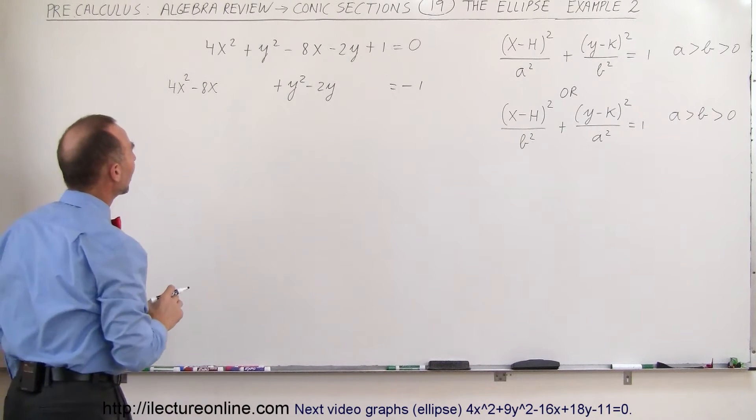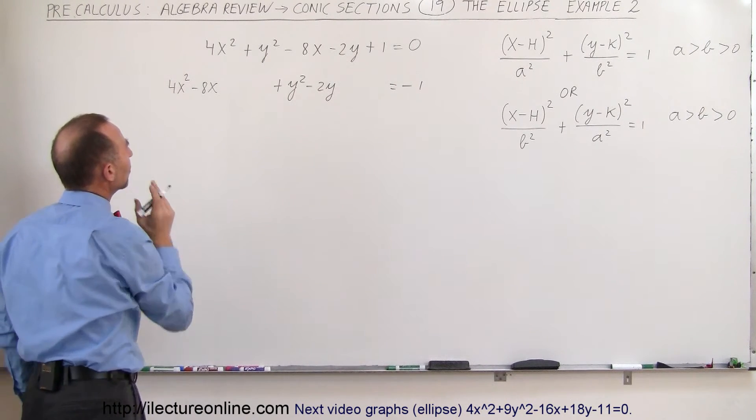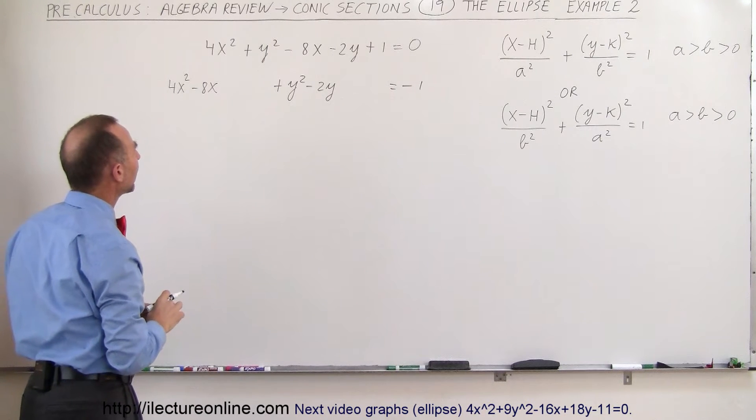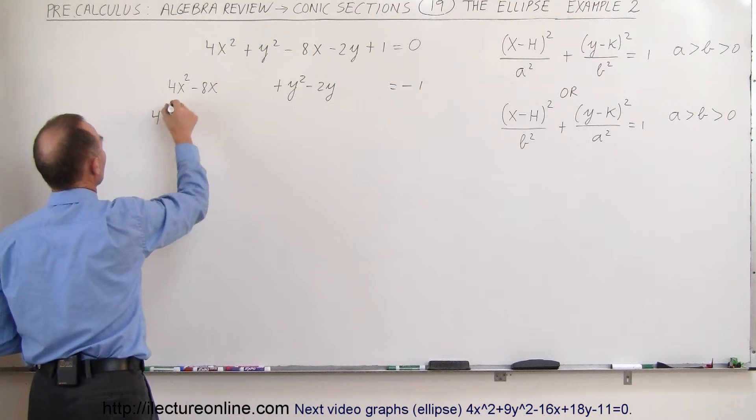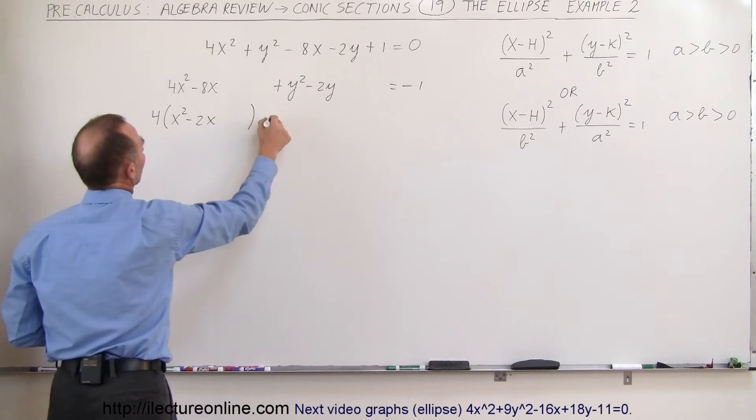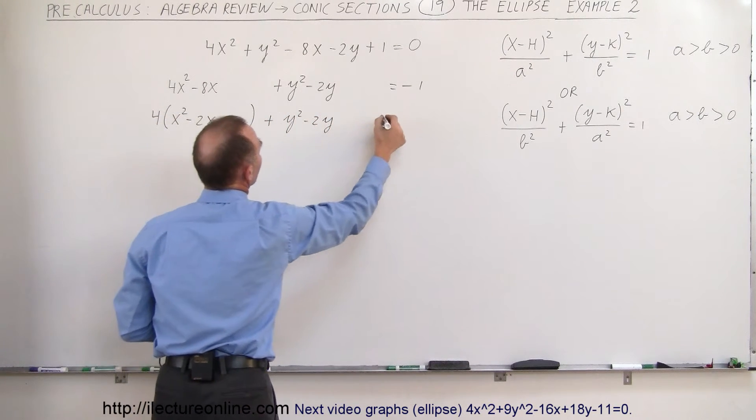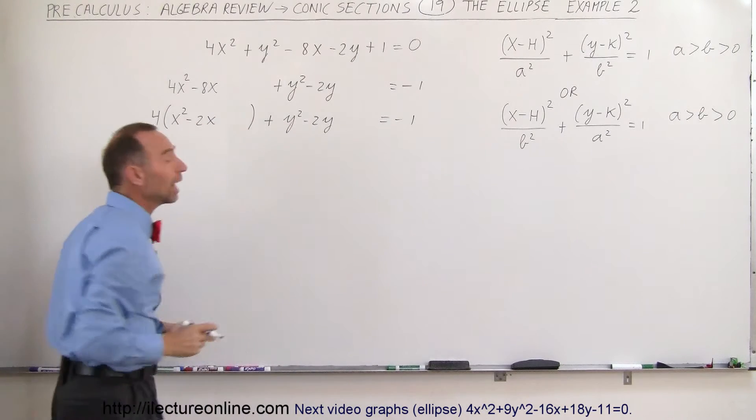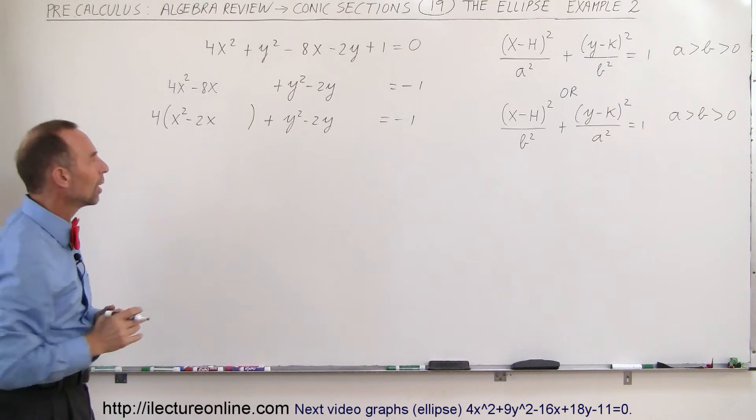So now we want to find a perfect square, but before we do that we probably want to go ahead and factor out a 4. So we take 4 times x squared minus 2x plus we have y squared minus 2y equals negative 1. Why did we do that? Well it's a lot easier to find the perfect square when the coefficient in front here is equal to 1.